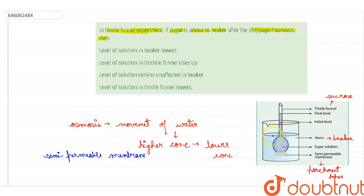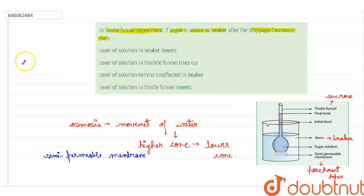Since the level in the thistle funnel increases, movement of water through the parchment paper — which acts as a semi-permeable membrane — can be seen. The force due to which the solution rises is known as osmotic pressure. The question tells us that if sugar solution is added to the beaker again, at some point osmosis will come to an end.